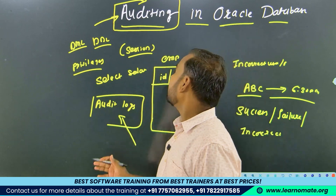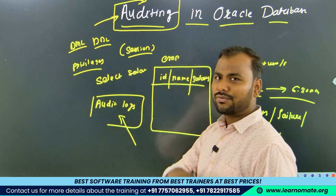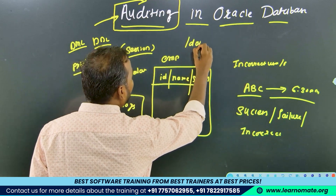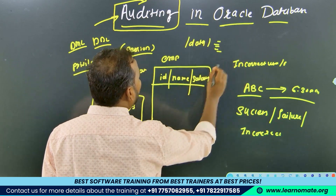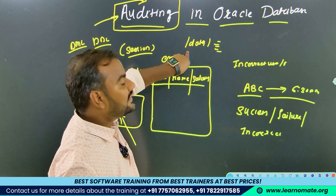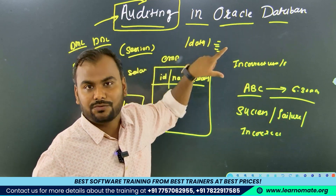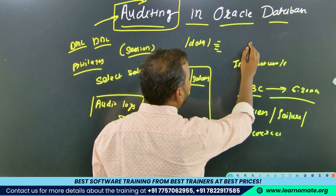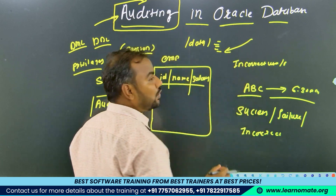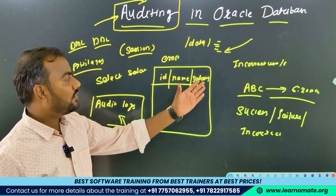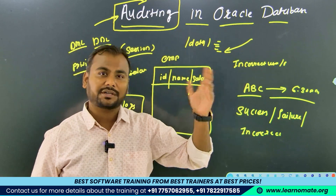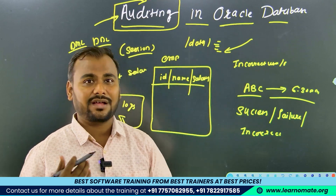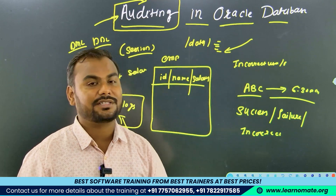The audit log destination can be set to any location, such as /data. When so many audit logs accumulate there, that file system will become full. So regularly you need to remove older audit logs — those older than 15 or 13 days, for example. That is extra work for the Oracle database administrator.